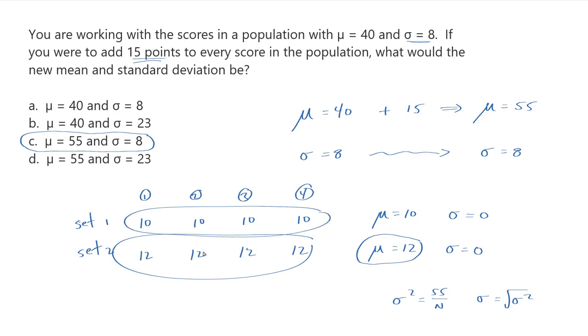So even though we added something to every single one of the scores to get from set one to set two, we didn't do anything to the variation, we didn't do anything to the standard deviation, and standard deviation measures variation. So doing the same thing to every score doesn't introduce any variation. It just moves all of the scores together in one group. So our answer is the answer where our measure of variation stays the same, but the average is affected by the adjustment that we make to every one of our scores.